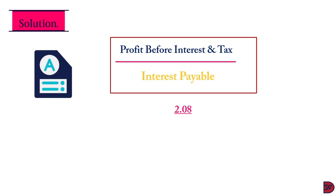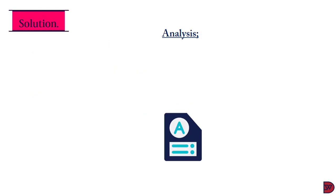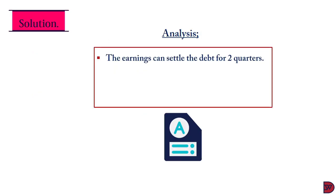For the solution, we restate the formula: Profit Before Interest and Tax divided by interest payable. The interest cover is 2.08, calculated by dividing the profit before interest and tax of 750,000 by the interest payable of 360,000. When we analyze this, because we worked for a quarter, the earnings can settle the interest on the debt for two quarters. The debt can be said to be within the capacity of the business, because at least if nothing happens in the next quarter, the business can still settle it.